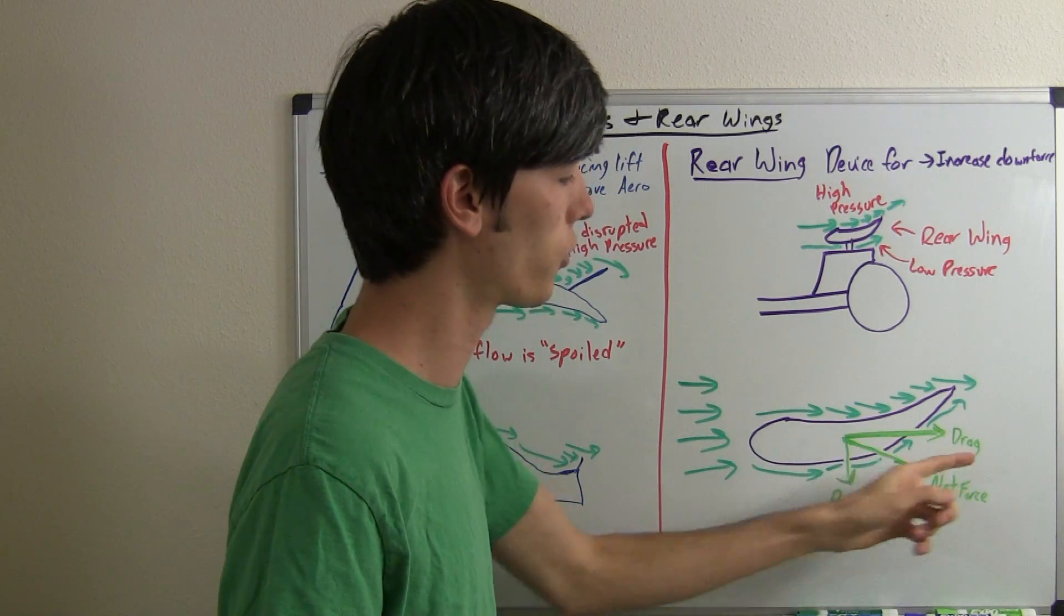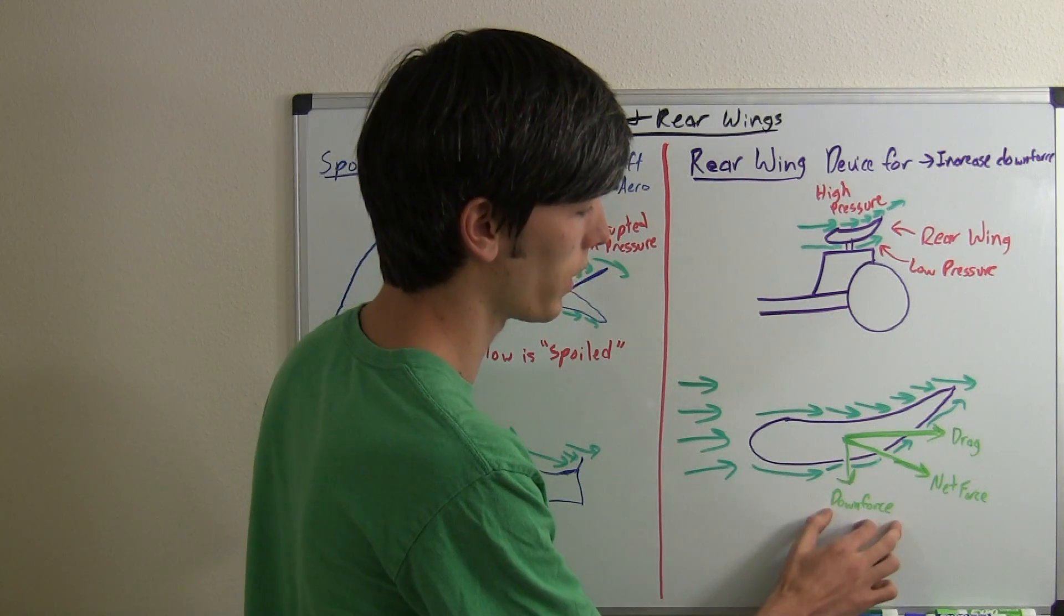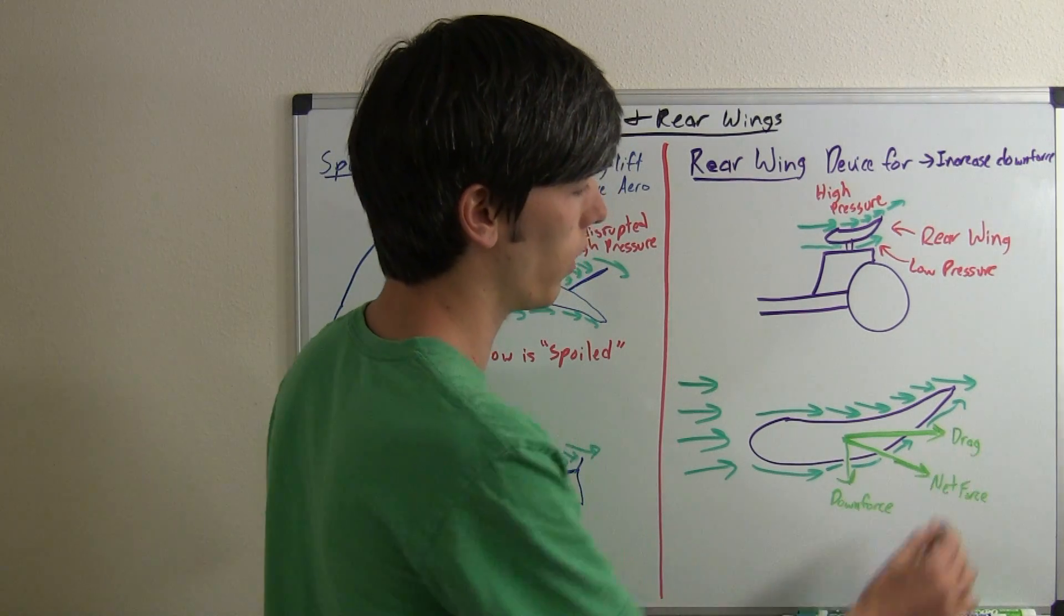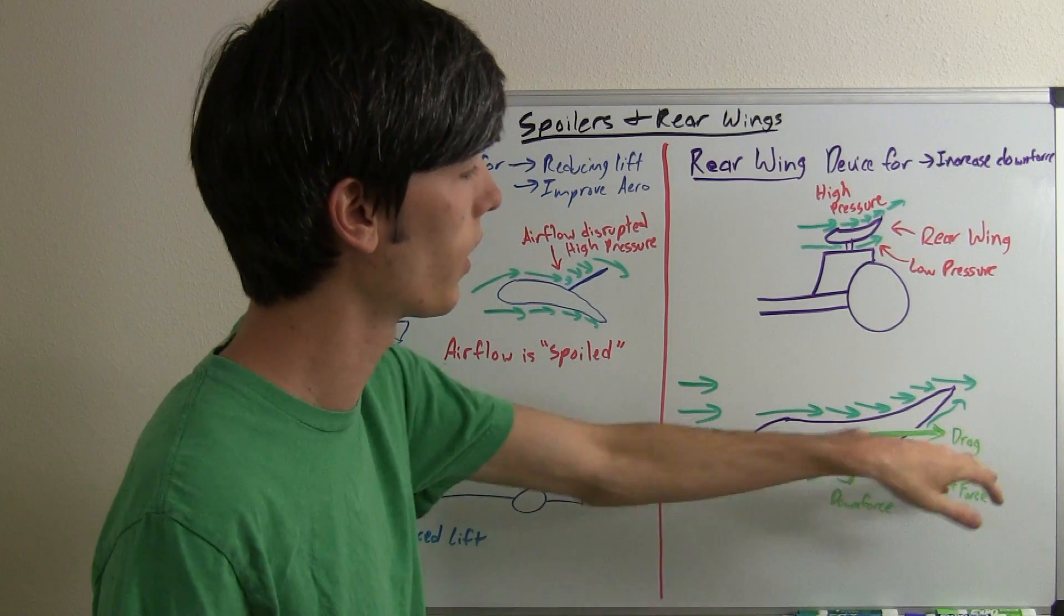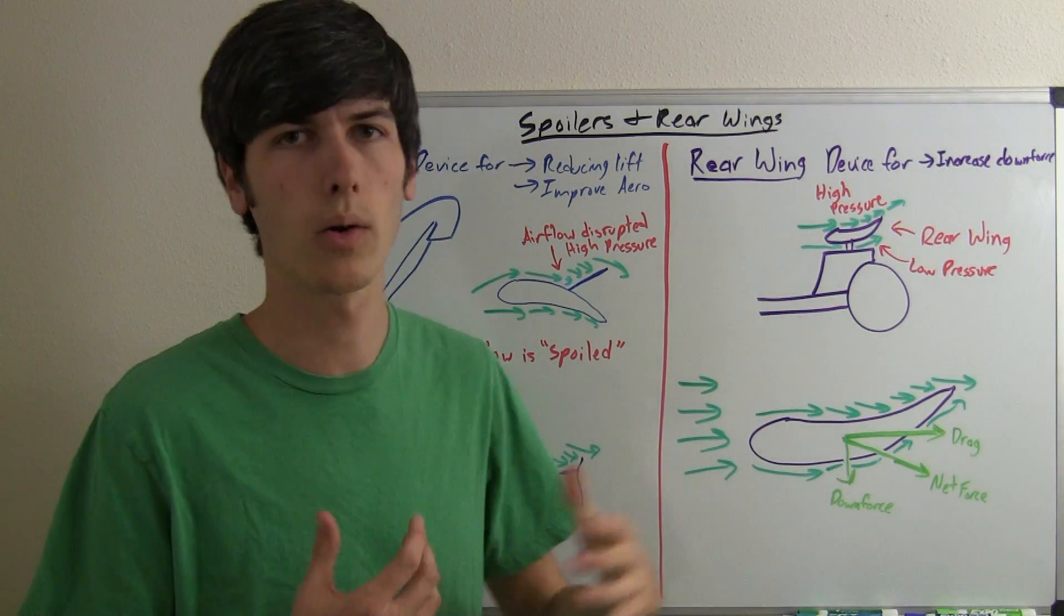Now the force pushing it back is drag, the force pushing it down is downforce. And this is ultimately the one that you want and this is the one that you don't want. So you want to maximize your downforce, minimize your drag and that's basically the intention of rear wings.